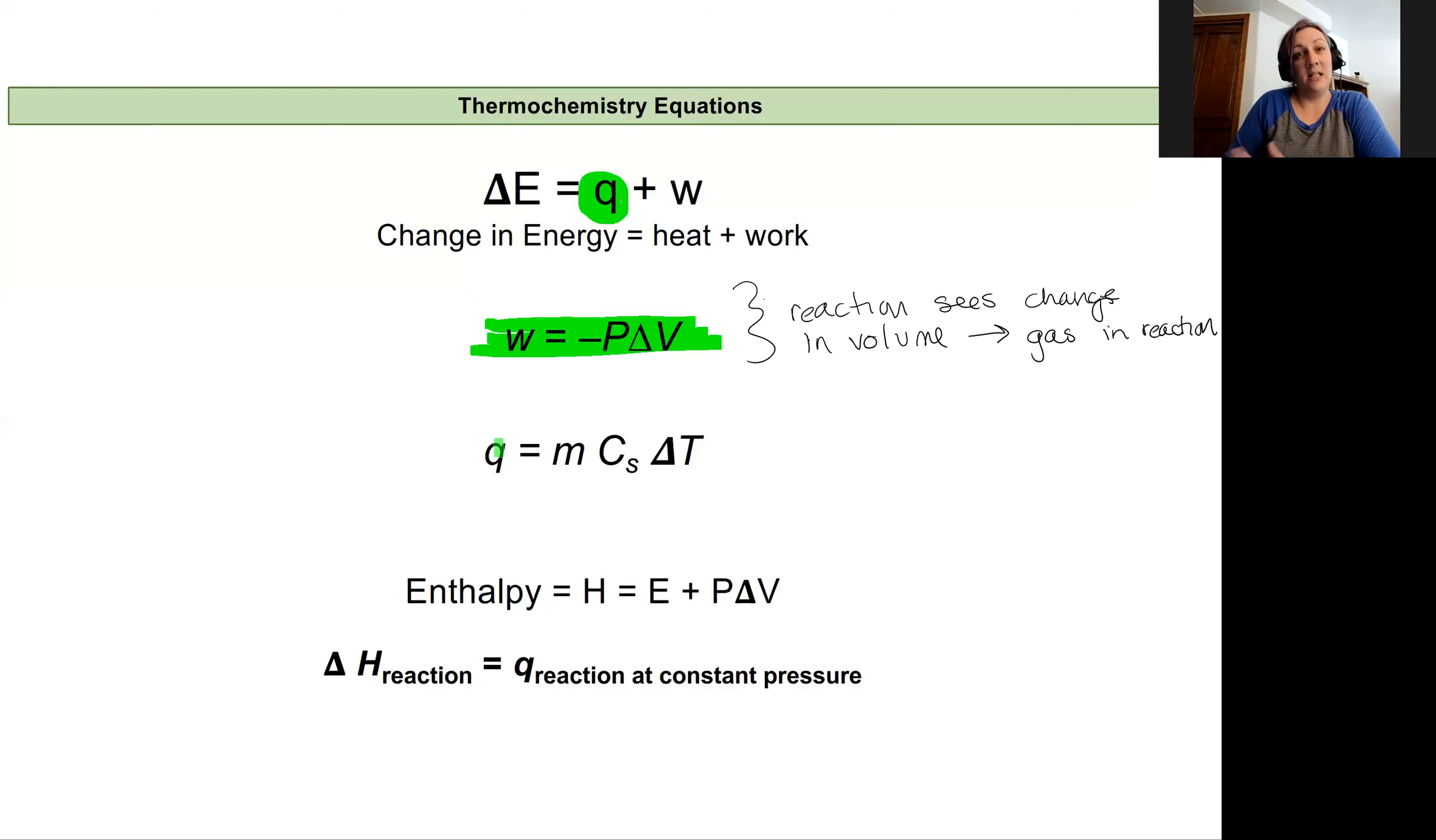And going back to heating and cooling curves, one of the common expressions of this is that heat is equal to the specific heat capacity of a substance times its mass times its change in temperature. And that'll be the heat that is lost from it or gained to another part of the system.